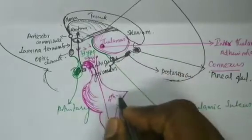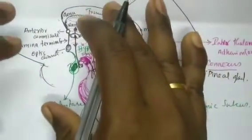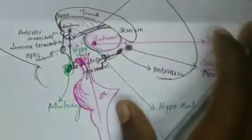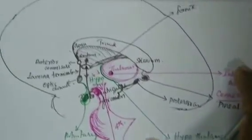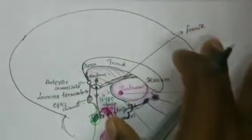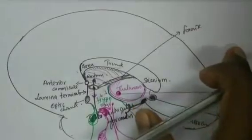So this is about the medial part in the midline. Next we have to learn about the sulci and gyri which are present in the medial surface of the cerebral hemisphere.